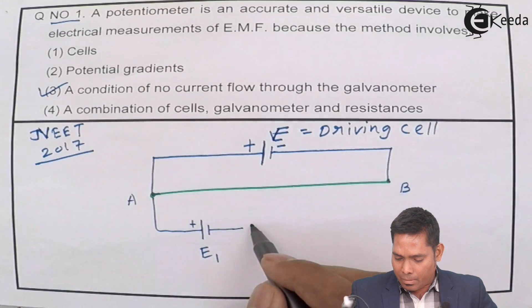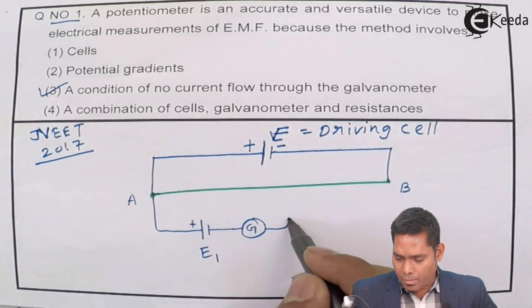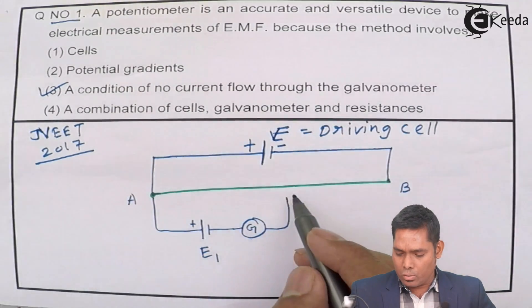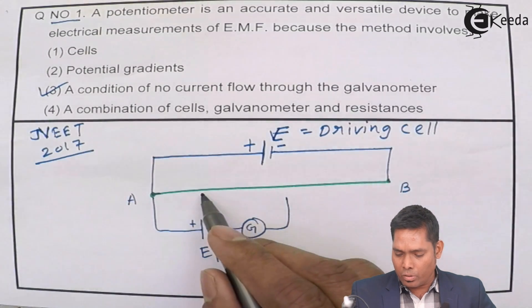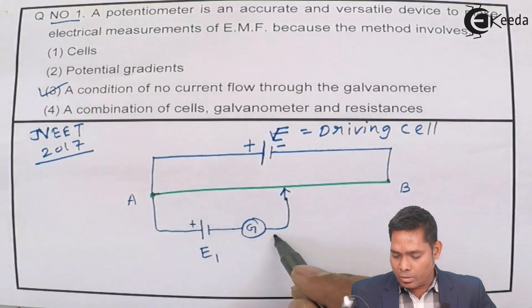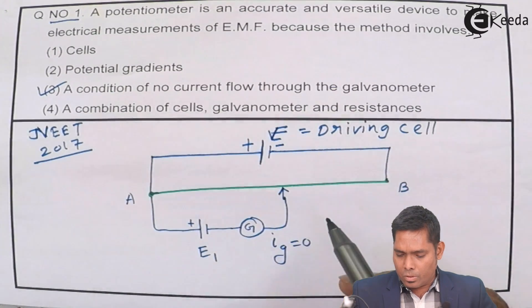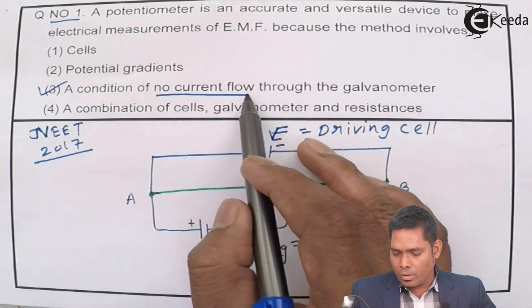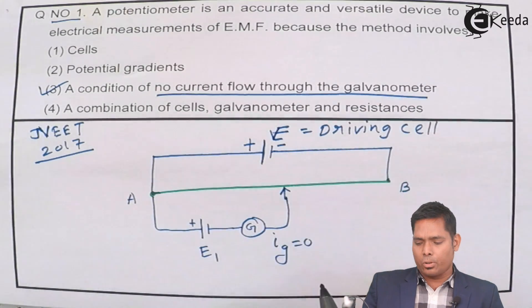And then we have a galvanometer. Then we have a jockey which is to be touched to any point on the wire. So that we get the current to the galvanometer is zero. No current flows through the galvanometer. So current to the galvanometer is zero.